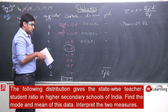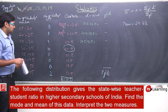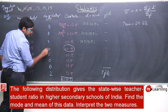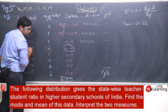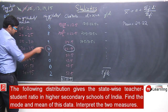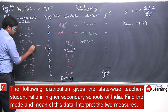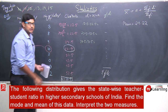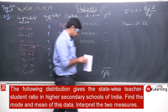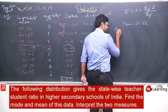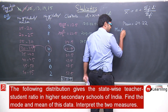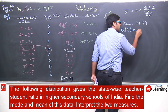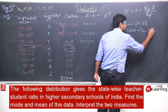Now to calculate the mode, we find the modal class — the class with maximum frequency. The maximum frequency is 10, which corresponds to the class 30 to 35. So the modal class is 30 to 35.